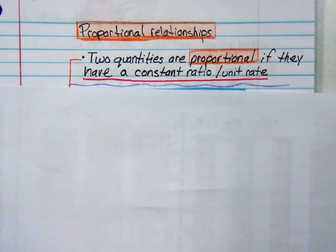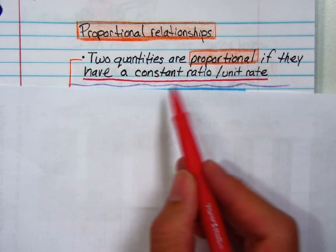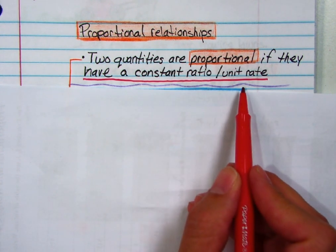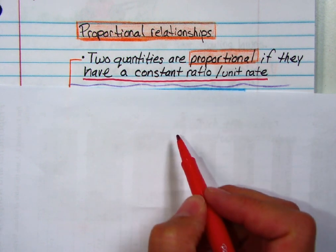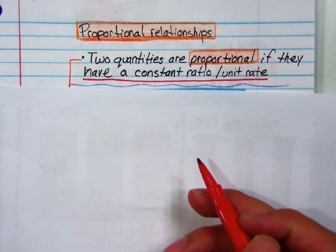So next are some definitions. Proportional relationships: two quantities are proportional if they have a constant ratio or a unit rate. So just like we did before when I found out all those different units, constant rates I should say, I found out that the unit rates were all the same, eight over one.